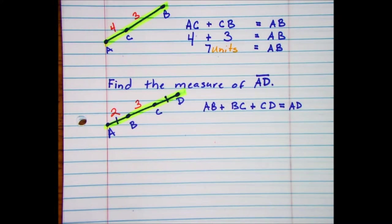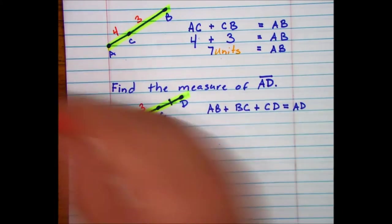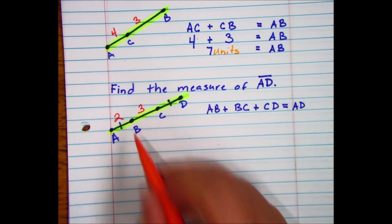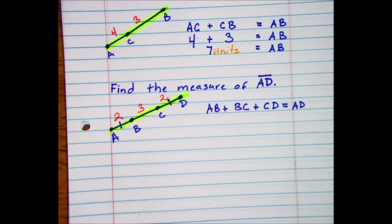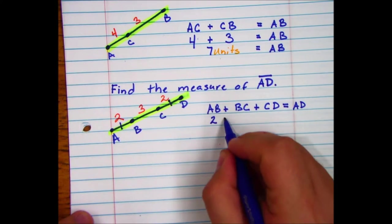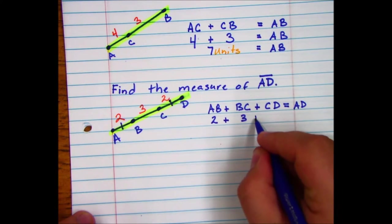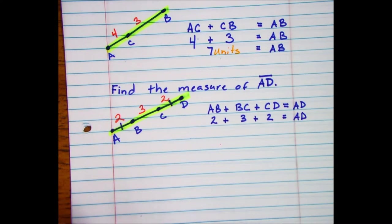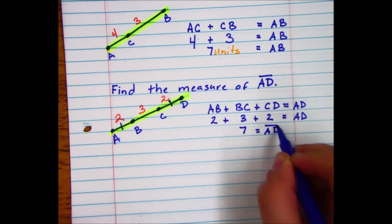Remember small section plus small section plus small section equals the whole section. Now we also have these little hash marks that identify that they are congruent. So if AB is congruent to CD, we know that AB is 2, so thus CD is 2. AB is 2, BC is 3, and CD is 2. 2 plus 3 plus 2 is equal to 7. So AD equals 7.